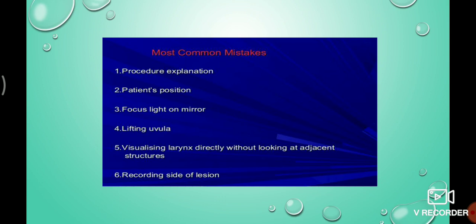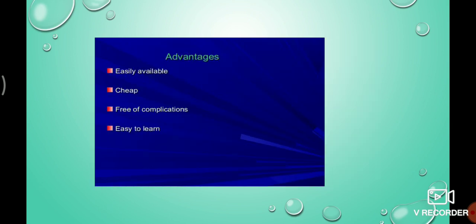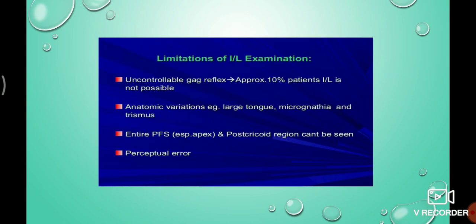The advantages of indirect laryngoscopy are that it is easy, it is an outpatient procedure, and it is cheap, with very few complications. The limitations include uncontrollable gag reflex, which makes the procedure not possible in some patients.